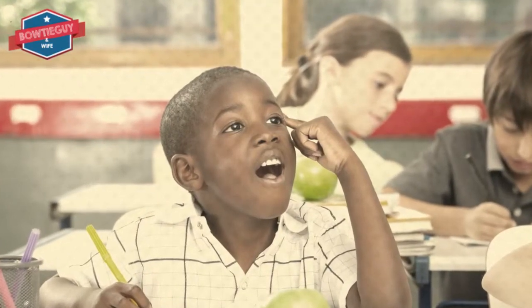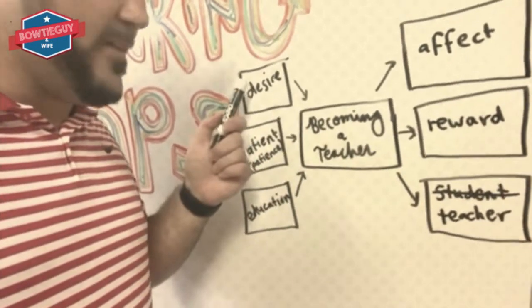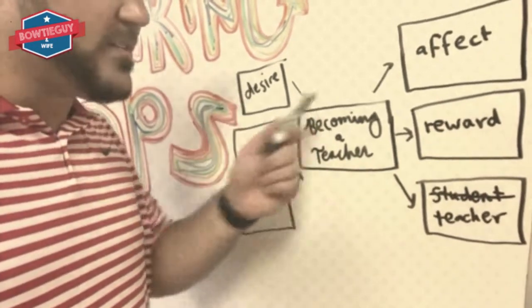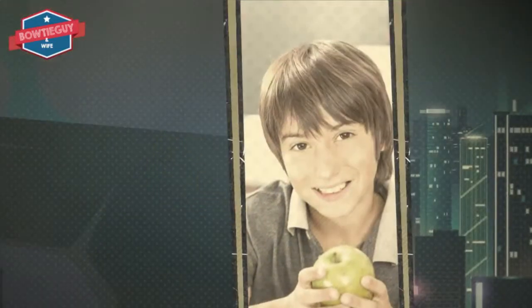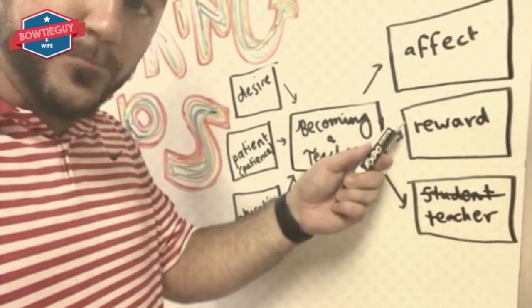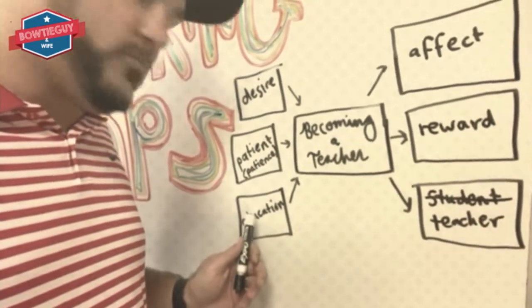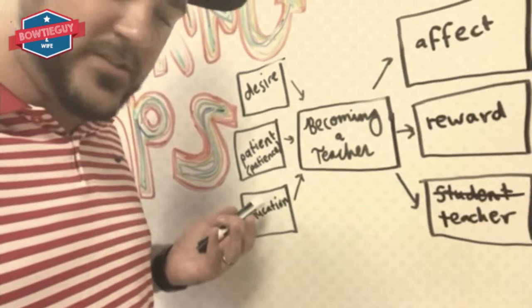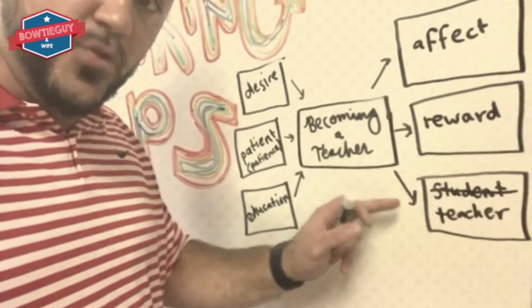This is known as a multi-flow map, and 'becoming a teacher' is going to be your topic. If you have desire, that's the cause — you can affect change. A cause of becoming a teacher: patience. But you will have a reward. Next cause of becoming a teacher: education. You love education, so instead of becoming a student, you become the teacher.